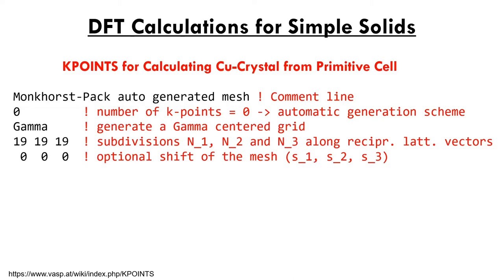But what are k-points, and why do we need to specify them? For many of the mathematical problems posed by DFT, it's more convenient to solve them in terms of reciprocal space, also called k-space, rather than real space — a consequence of Bloch's theorem. Much like how the primitive cell in real space is the minimum volume containing all information to describe an entire crystal, a similar primitive cell can be described in reciprocal space. This reciprocal space primitive cell is called the Brillouin zone, or BZ, and its center is called the gamma point.